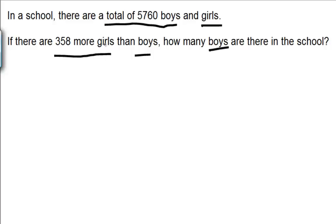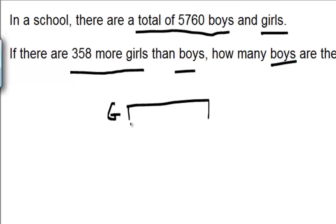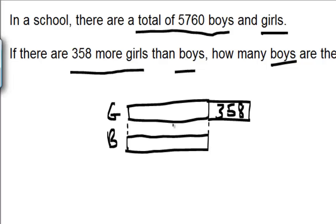Let's draw a model representing this statement here. The number of girls is 358 more than the number of boys. So these are the number of boys here and these are the number of girls here.